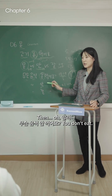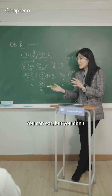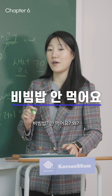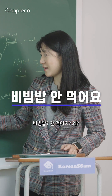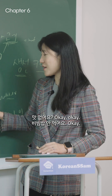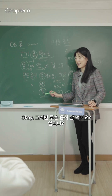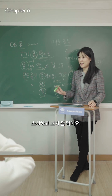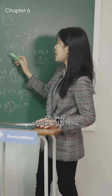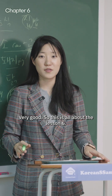Next: 무슨 음식 안 먹어요? — Which food don't you eat? You can eat it, but you don't. 비빔밥 안 먹어요? — You don't eat 비빔밥? 왜? — Why? Then: 무슨 음식 잘 먹어요, Alina? 스시하고 고기 잘 먹어요 — I eat sushi and meat well. 스시하고 고기 잘 먹어요. This is all about lesson 6. Thank you.